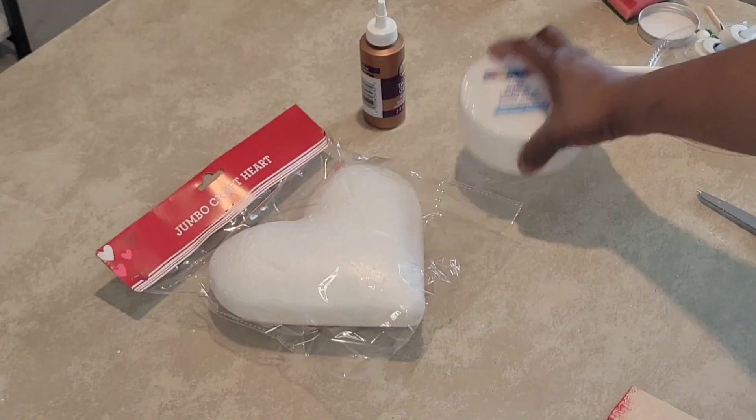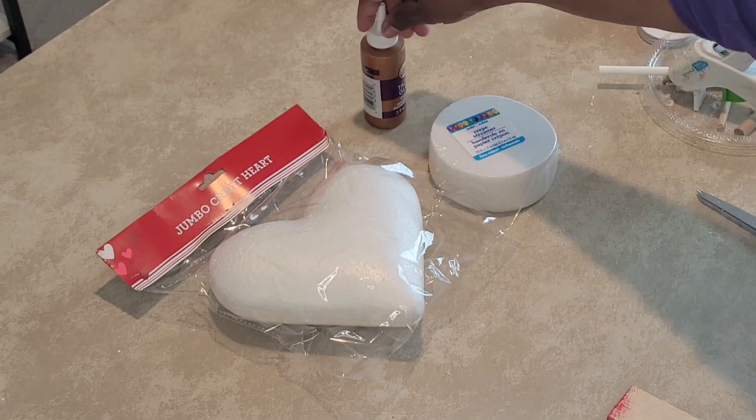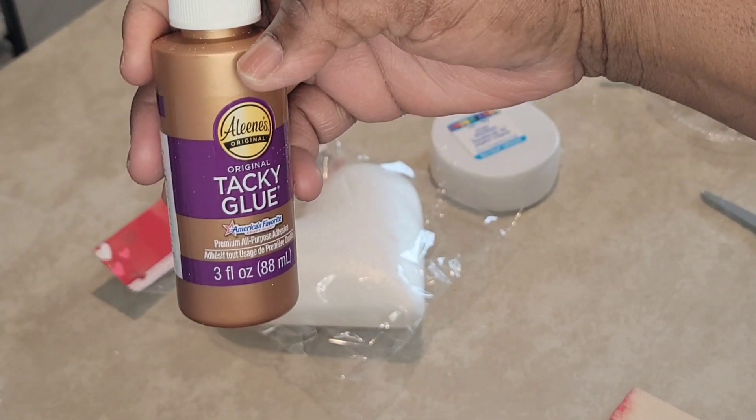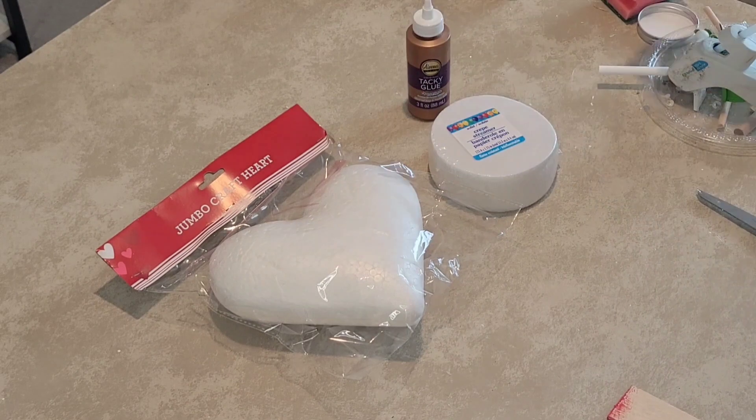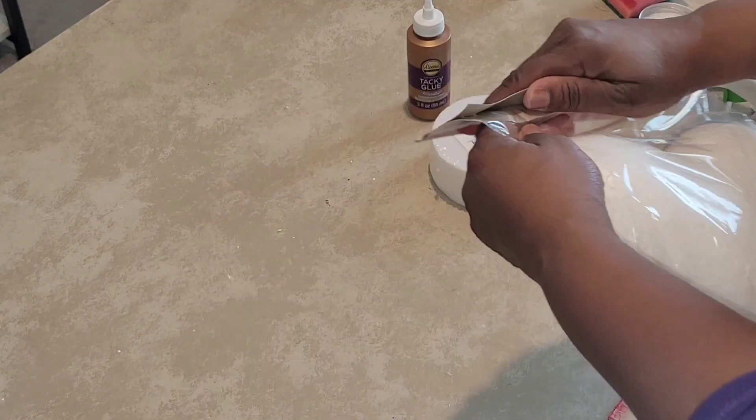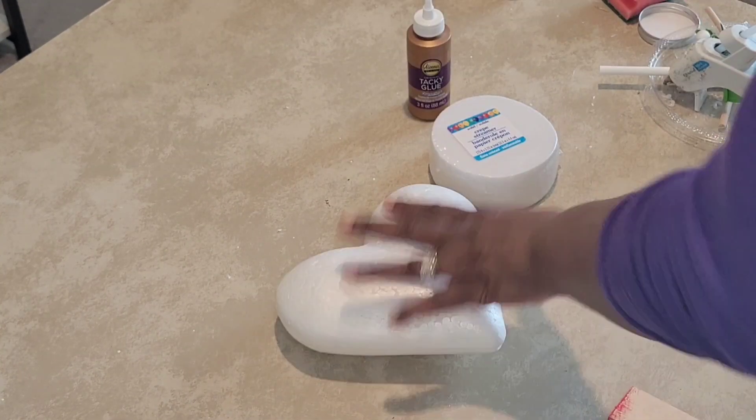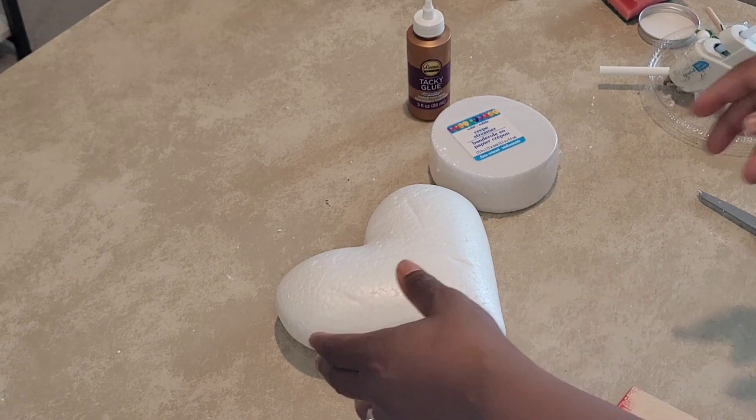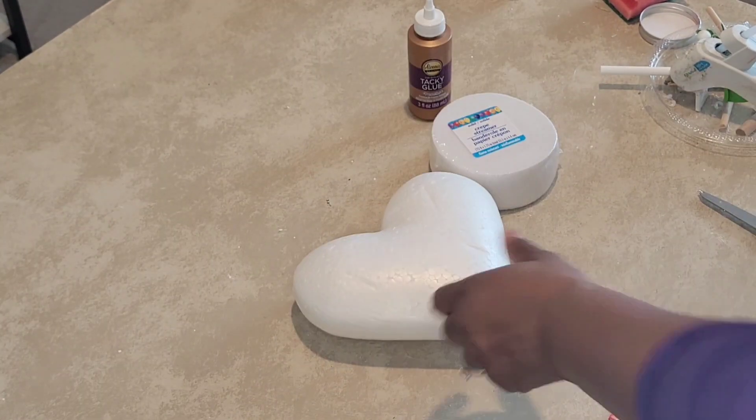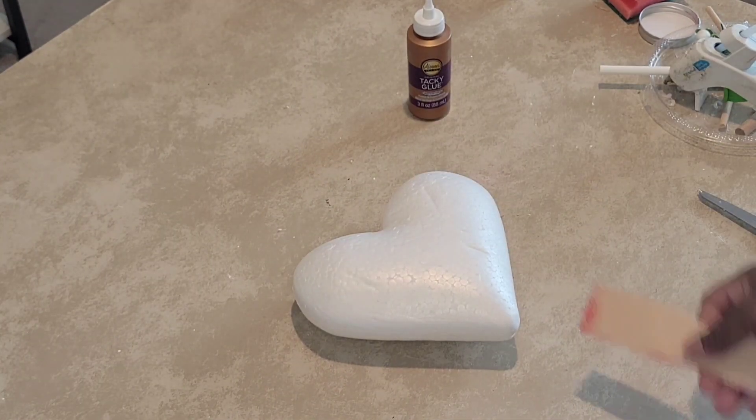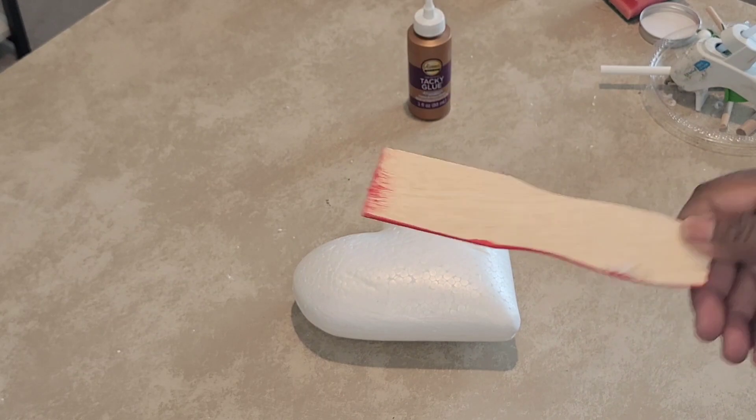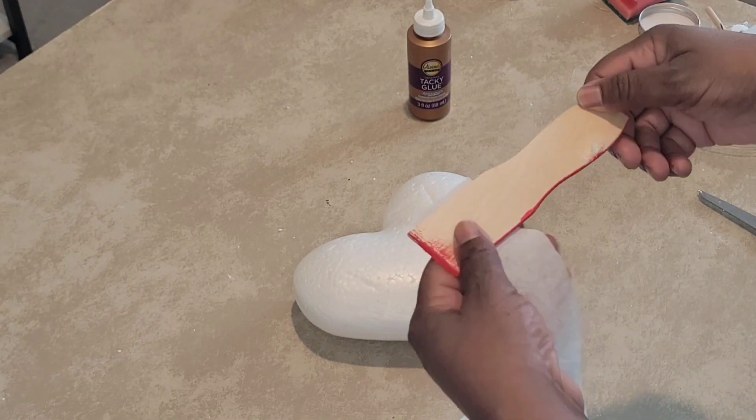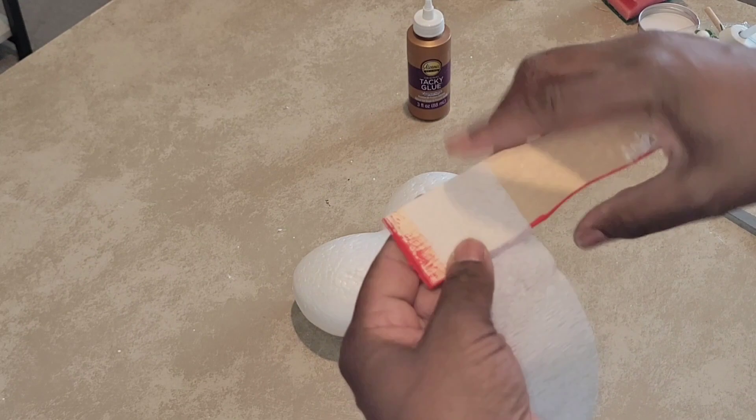All right, we have three y'all. And so the first one is this jumbo foam heart from the Dollar Tree. I have some of the tacky glue from the Dollar Tree as well as some of the streamers. All right, so what I'm going to do is I have this little leftover paint stick that I use in something else.